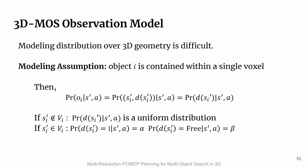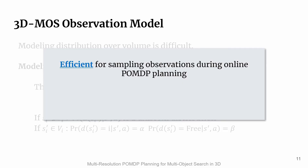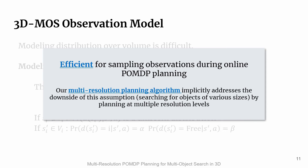When the voxel corresponding to the object state is not in the field of view, the distribution is uniform. If it is, then the label of i indicates a positive detection, and otherwise it indicates a negative detection. This observation model allows for efficient sampling of observations during online POMDP planning. Our multi-resolution planning algorithm implicitly addresses this assumption's downside of searching for objects of various sizes by planning at multiple resolution levels.